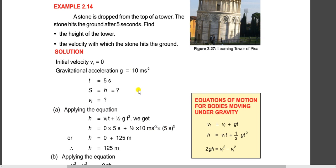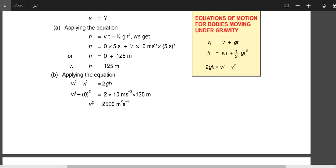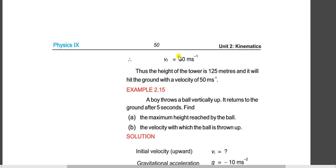Now we find the final velocity when the stone hits the ground, using the third equation: vf² = vi² + 2gh. Substituting vi = 0, g = 10, and h = 125: vf² = 0 + 2 × 10 × 125 = 2500. Taking the square root, vf = 50 meters per second. The stone hits the ground at 50 meters per second. I hope students understand. Allah Hafiz.